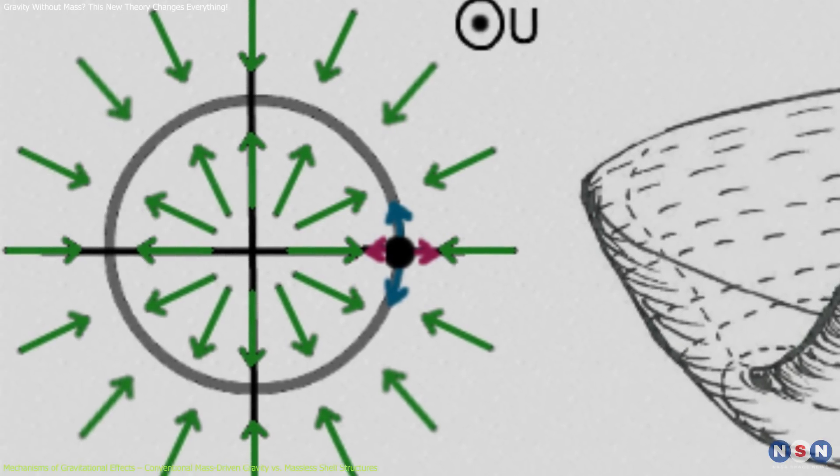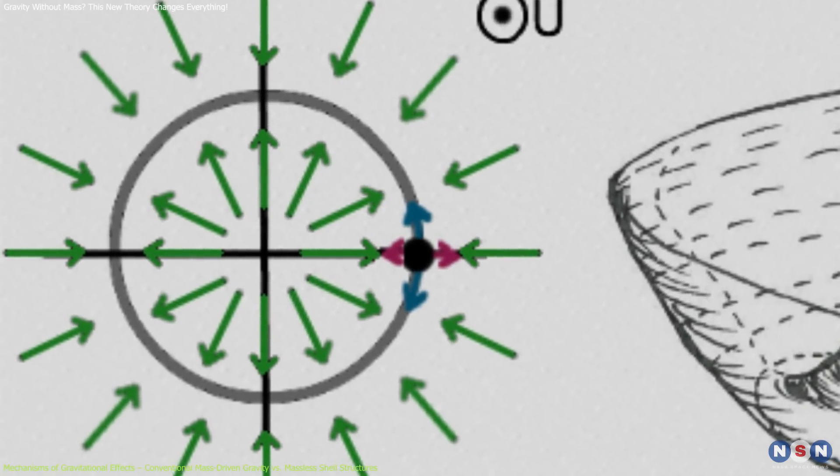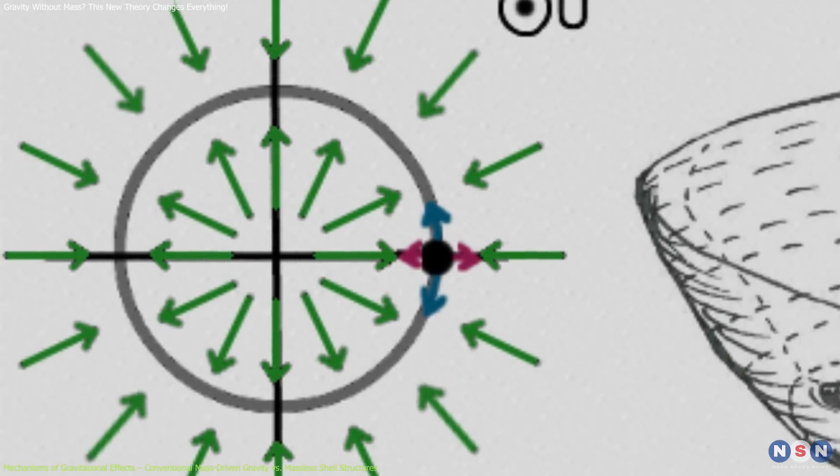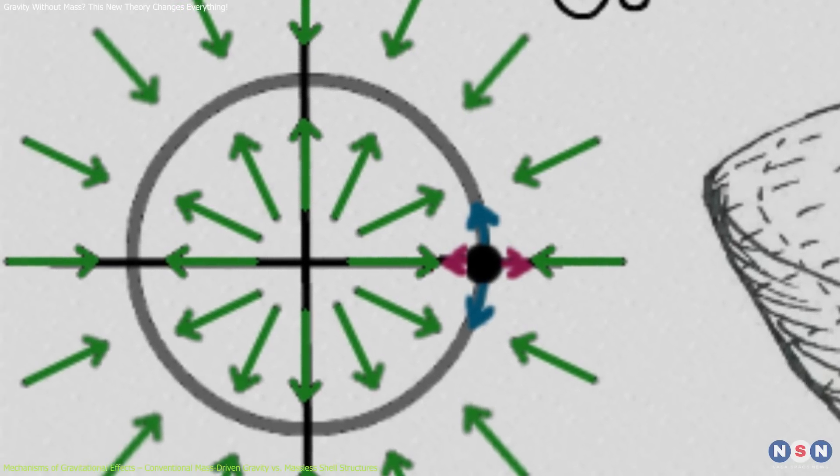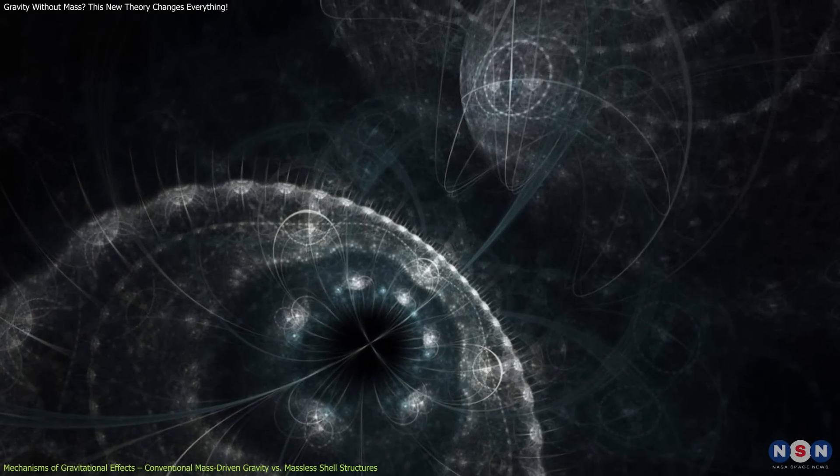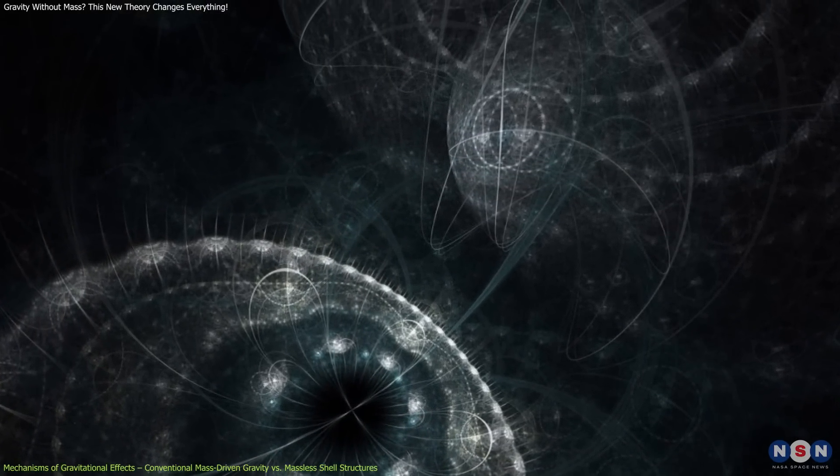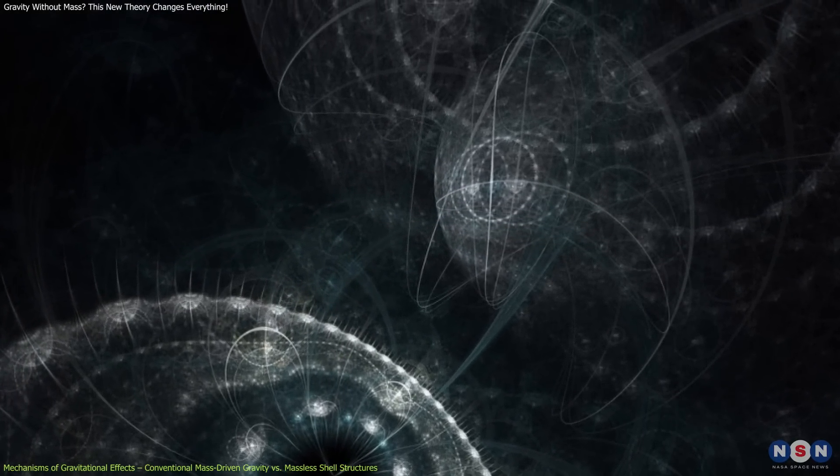These shells are topological defects with an inner layer of positive mass and an outer layer of negative mass, which together balance out to a net mass of zero. Remarkably, even without net mass, these shells can still generate gravitational fields.